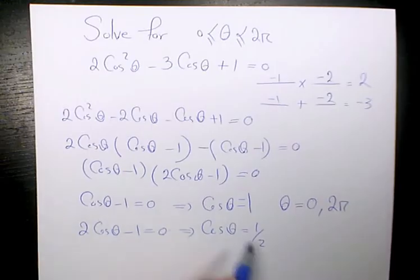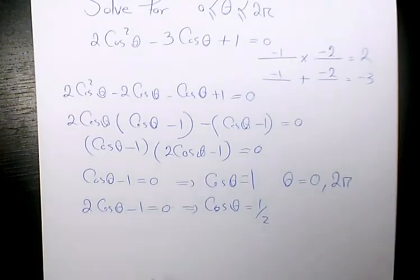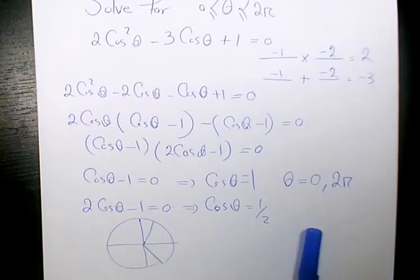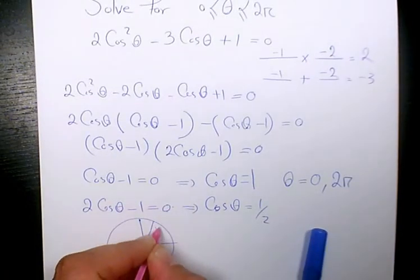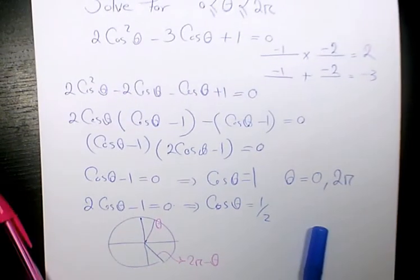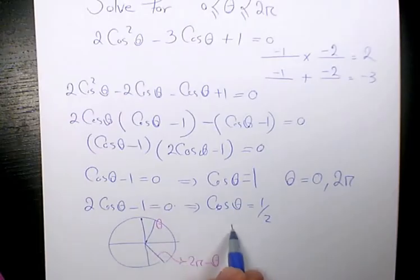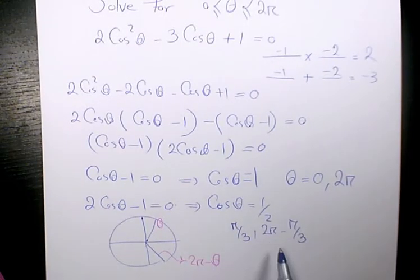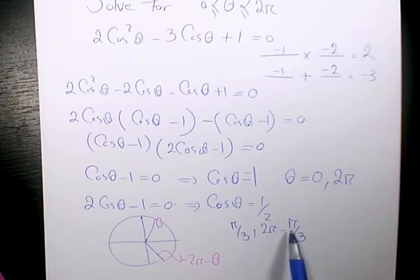For cosine theta equals 1 half, cosine is positive in quadrant 1 and quadrant 4. In quadrant 1 we have theta, and in quadrant 4 we have 2 pi minus theta. Cosine pi over 3 is 1 over 2, so the other answer is 2 pi minus pi over 3. With a common denominator, that's 6 pi minus pi.